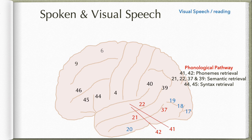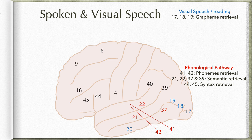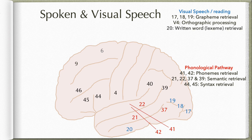Coming to visual speech or reading — this is a slightly more complicated pathway. Areas 17, 18, and 19 — the primary and secondary visual areas — are involved in grapheme retrieval. They see the letter and whether it is written with a straight line, horizontal line, dot, bump, or curvature — that is understood here. This information is sent to V4 (the anterior part of area 19) for orthographic processing — whether the letters are written correctly. Then it is sent to area 20 in the inferior temporal gyrus, including the fusiform gyrus, for lexeme retrieval — where letters are put side by side to make words.